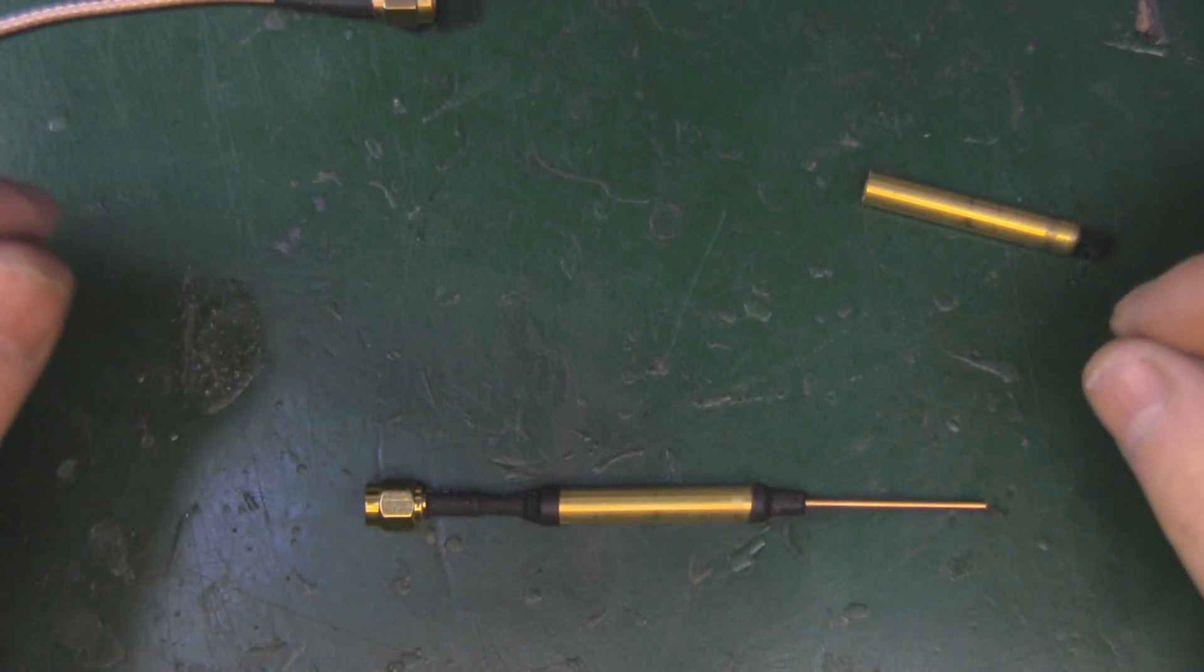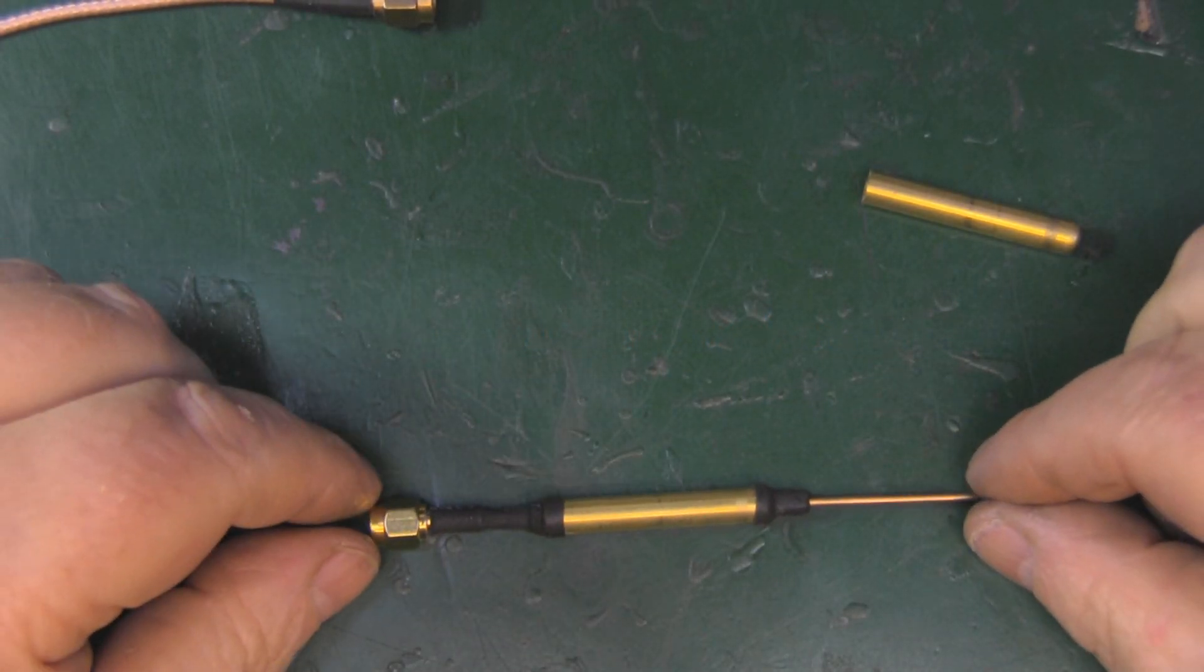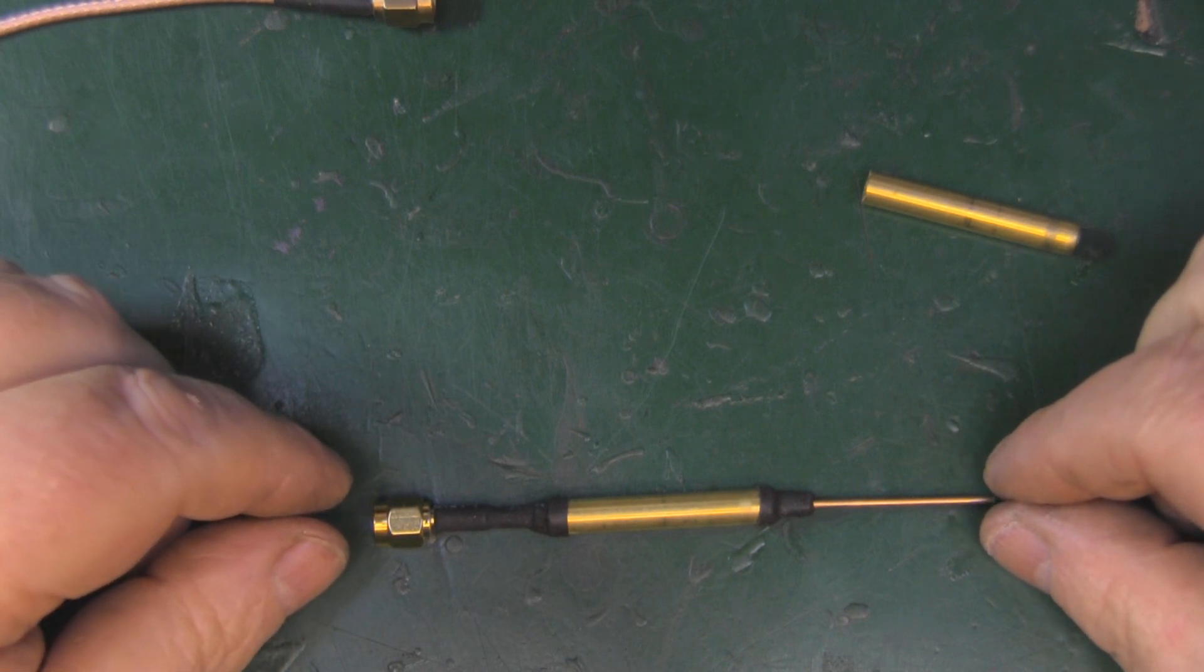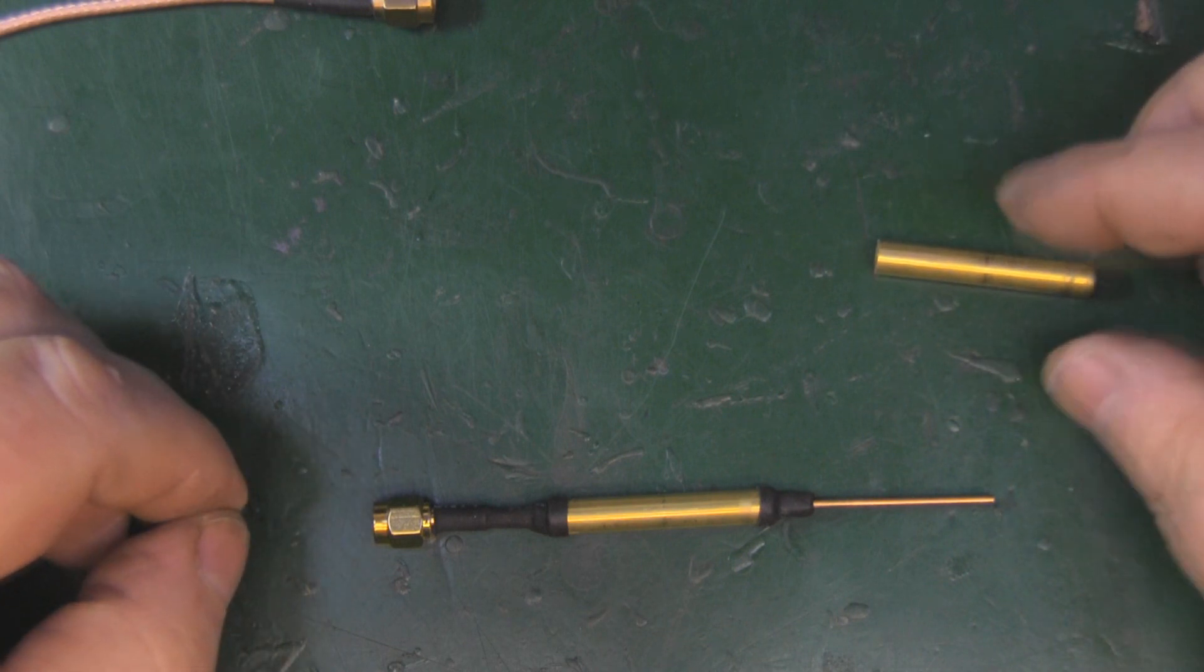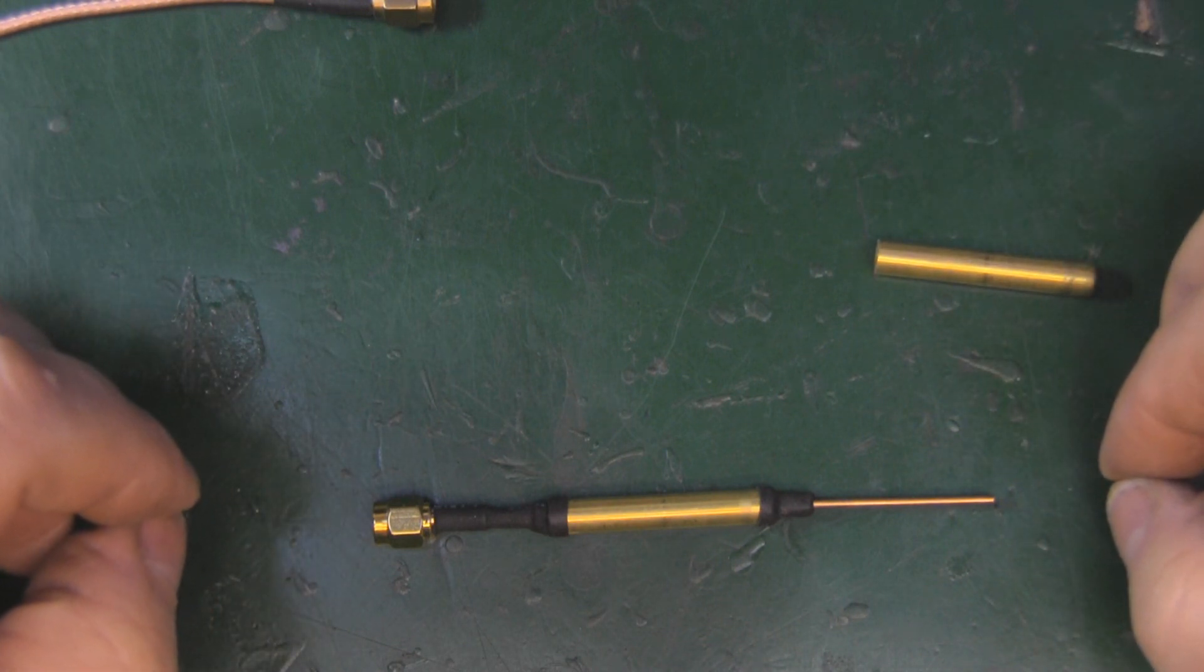In this video we're going to build a simple Hertzian dipole for 800 megahertz, but I'm going to use quite thick brass tubing in the hope that we get quite a wider bandwidth with this particular antenna.